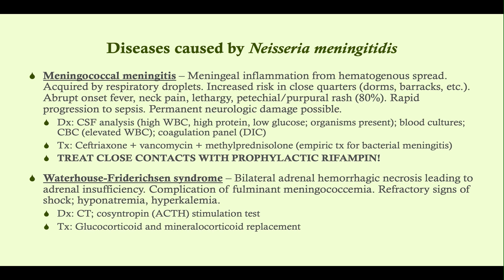Here are our diseases. The big one is meningococcal meningitis — a big problem. This is meningeal inflammation due to hematogenous spread. It colonizes the nasopharynx, acquired by respiratory droplets, then spreads through the blood ultimately into the meninges. There is an increased risk in patients in close quarters — think college kids in dorms, military recruits in barracks, and prisoners. Anyone living in very close quarters is at increased risk for meningococcal meningitis.